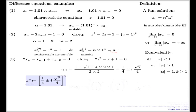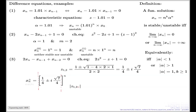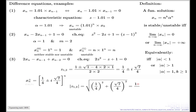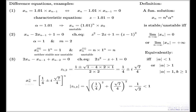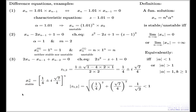This solution — in order to classify this one, you have to compute the absolute value of your alpha. The absolute value of this alpha is the square root of the sum of squares of the real and imaginary parts. In this case, it's just √(1/2), which is less than 1. That's why this solution is stable.